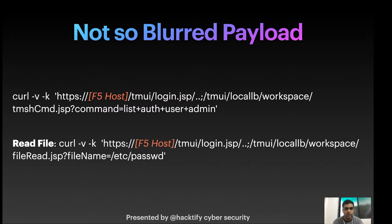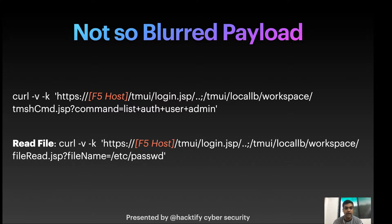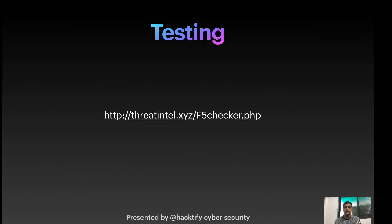Looking at the unblurred payload: it's a curl request to the F5 host at the TMUI endpoint, with command equals list plus auth plus user plus admin — listing authenticated users including the admin. To read a file from the target server, use the same endpoint but with filename equals /etc/passwd at the end of the payload. Now it's testing time — we're going to do automation for mass hunting.